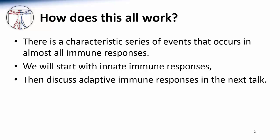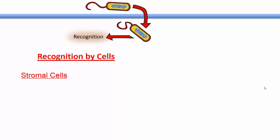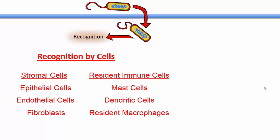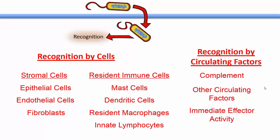So how does this actually work? There is a characteristic series of events that occurs in almost all immune responses. First, we have barriers to entry designed to keep pathogens out of our bodies. If these barriers fail, pathogens enter and must be detected or recognized. Pathogens are recognized by our cells — these can be stromal cells including epithelial cells, endothelial cells, or fibroblasts, as well as various immune cells resident in our tissues such as mast cells, dendritic cells, resident macrophages, or innate lymphocytes. Pathogens are also recognized by various circulating mediators, the major one being complement, which provides an immediate effector response.